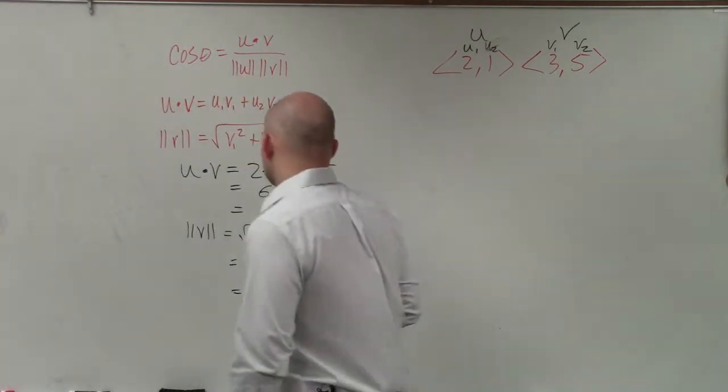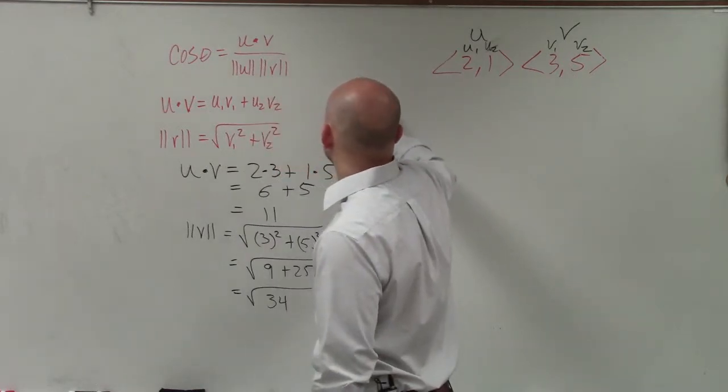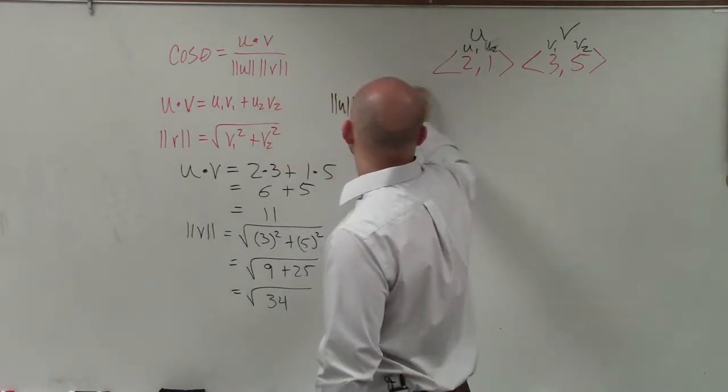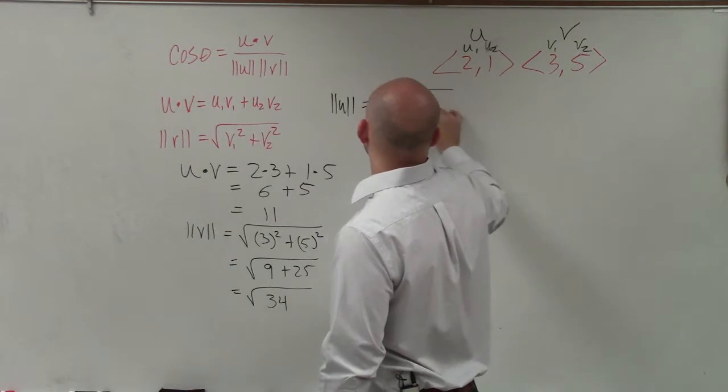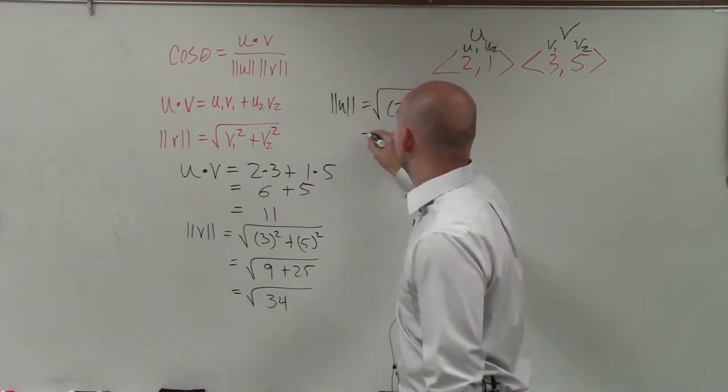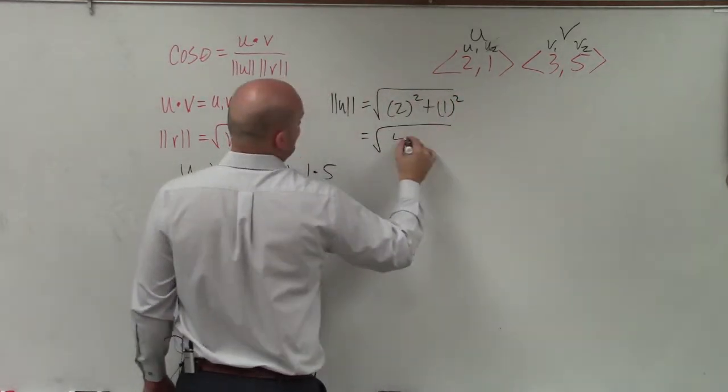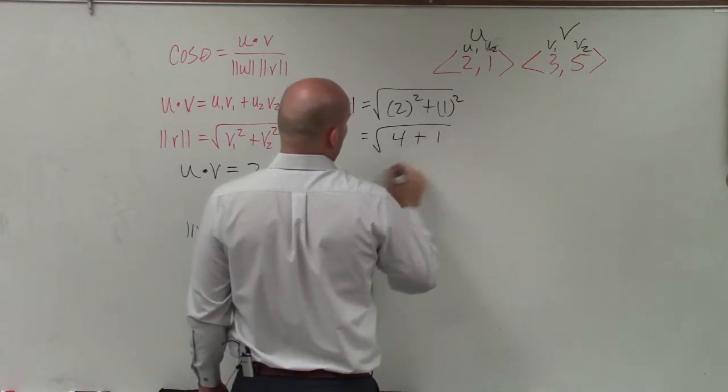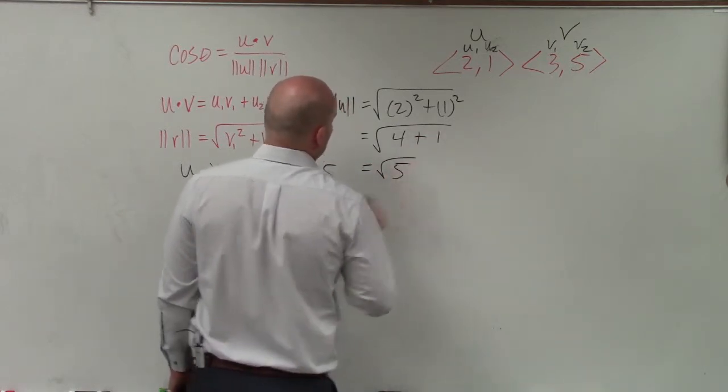Now let's go ahead and figure out the magnitude of u, which is equal to the square root of 2 squared plus 1 squared, which equals 4 plus 1, which equals the square root of 5.